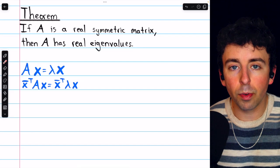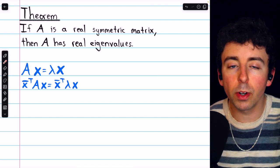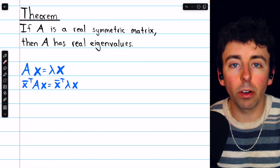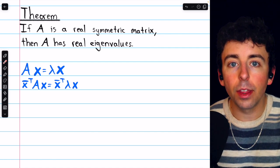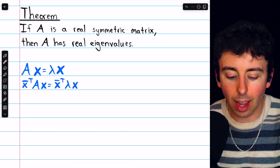So let's go through a proof. For our proof, let's assume that lambda is an eigenvalue of our arbitrary real symmetric matrix A, and that x is a corresponding eigenvector. Then by definition, A times x equals lambda times x.